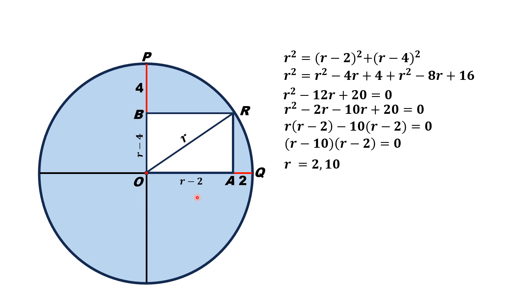From here, r = 2 or 10. Since 2 is a tiny length and the radius must be larger than both 2 and 4, we reject r = 2 and accept only r = 10 as the valid value of the radius.